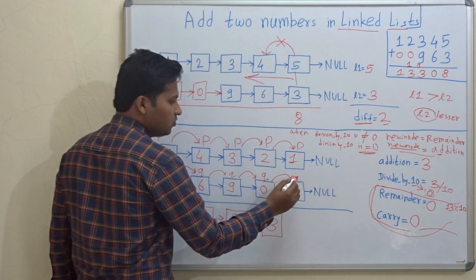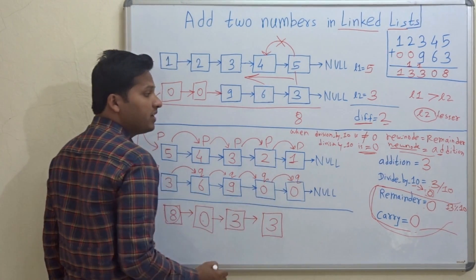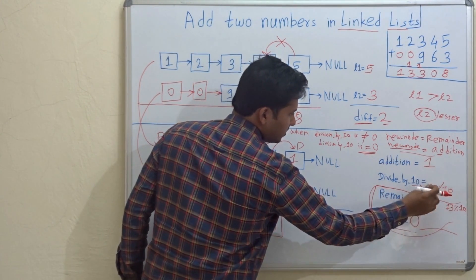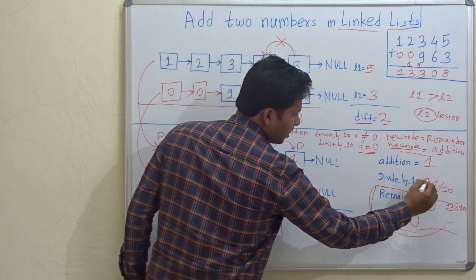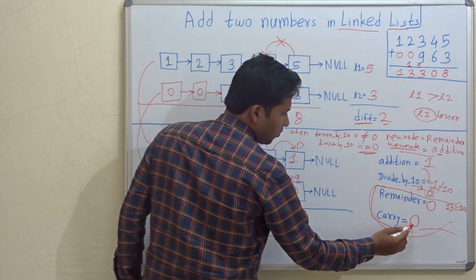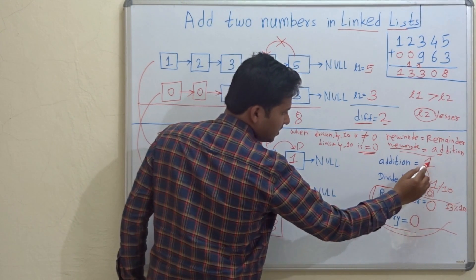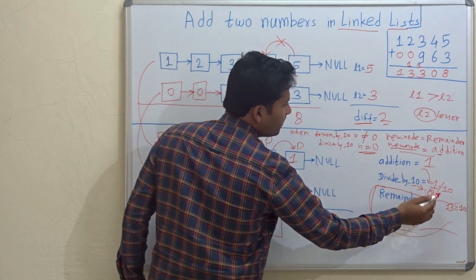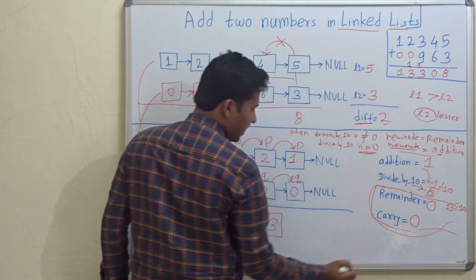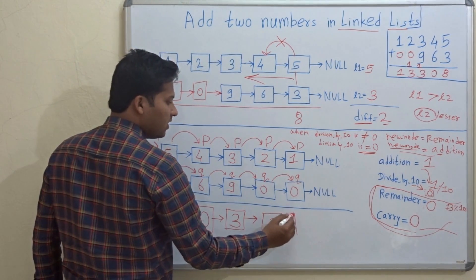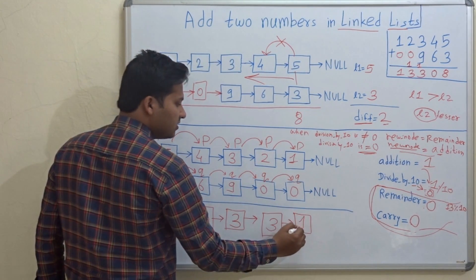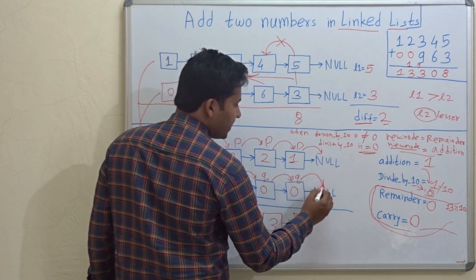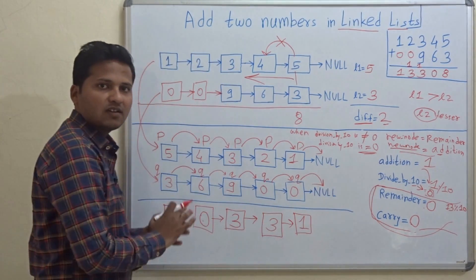P and q go ahead. 1 plus 0 is 1. Since the carry is 0, 0 plus 1 is 1. 1 divided by 10 is 0, so remainder is 0 and carry is 0. Directly create a new node and write addition 1 in that node. P and q go ahead — both are null, so we are done.